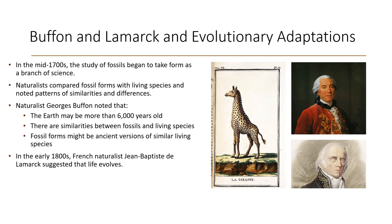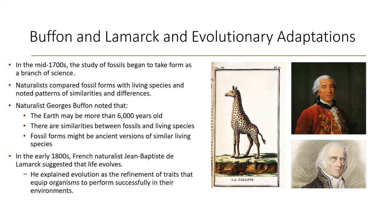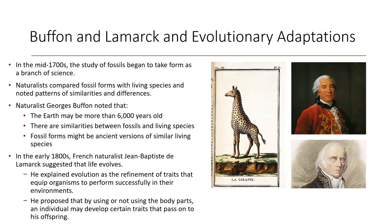In the early 1800s, naturalist Jean-Baptiste Lamarck suggested that life does evolve, and he is credited with the first theory of evolution — one that is ultimately proven wrong. Lamarck said evolution is a refinement of traits that help organisms perform successfully in their environments. He said that if organisms use or don't use specific body parts, that will be passed on to the next generation. This is not how evolution takes place, but it was an early step in thinking about life evolving.